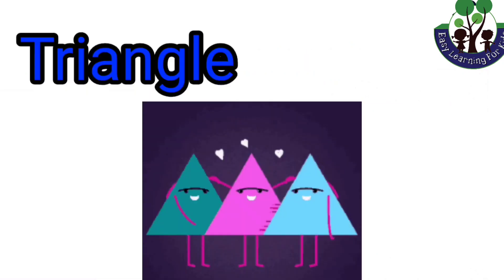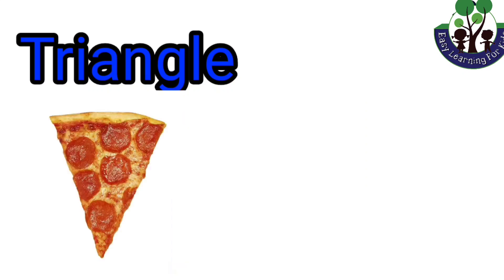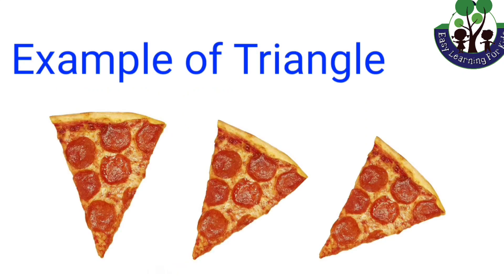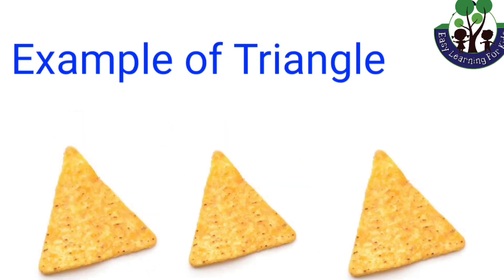Triangle. A triangle is a shape with three sides and is categorized as a two-dimensional geometric shape. For example, one slice of cheese pizza and the shape of tangy nacho.